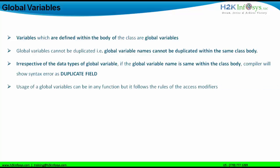Usage of global variables can be in any function, but it follows the rules of access modifiers. Global variables can be used in all the methods present in a particular class file. Not only that, they can also be used in other class files. The dependency to use a particular global variable in another class file will depend on the access modifier.